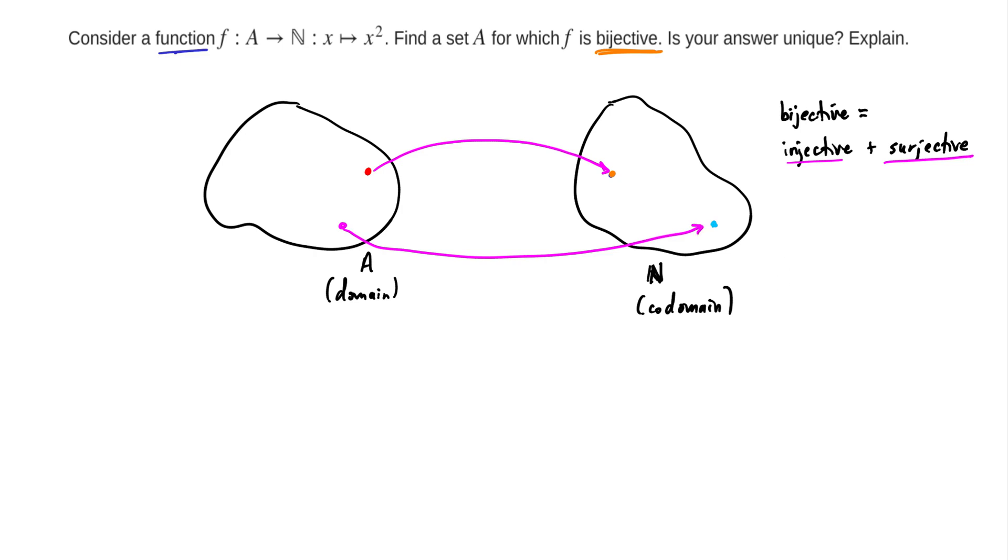When you take both of these together, it means that every point over there has exactly one arrow coming in. And so bijective is said in calculus terms to mean one-to-one and onto. So a bijective function is both one-to-one and onto in calculus notation.